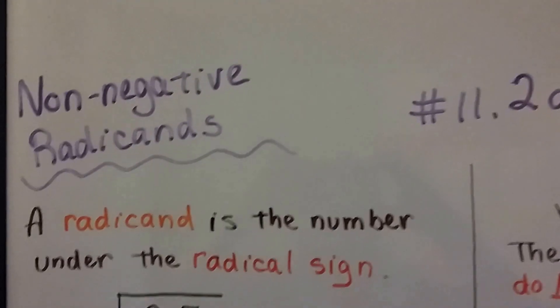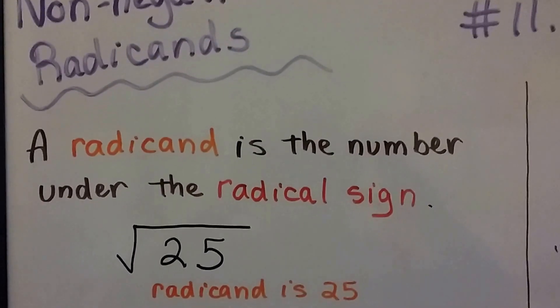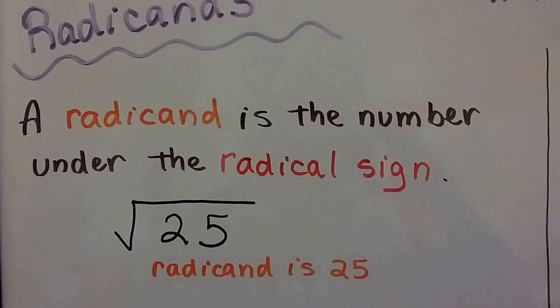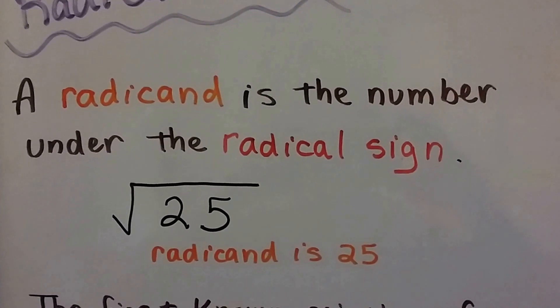Non-negative just means it's not negative, right? A radicand is the number that's under the radical sign. That's the square root symbol. So the 25 is the radicand.